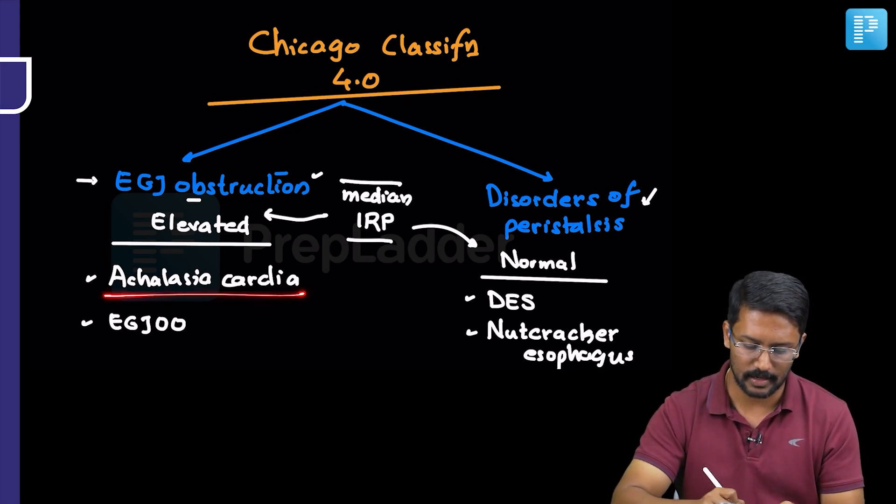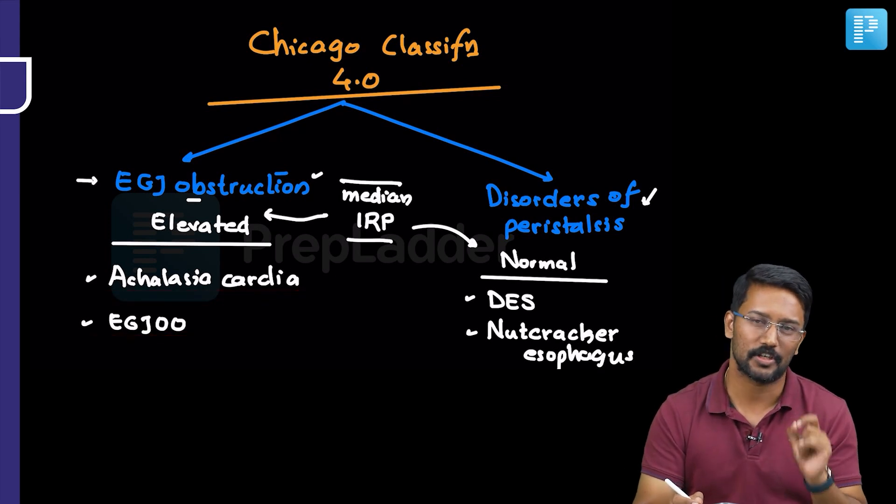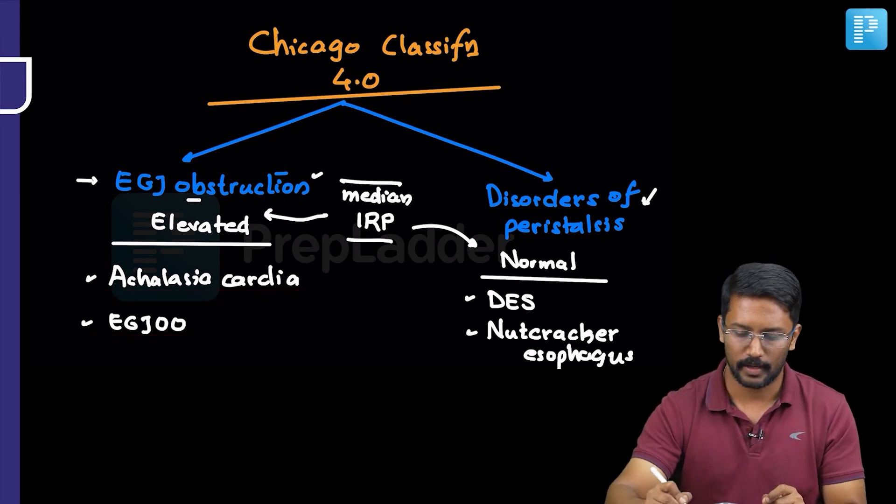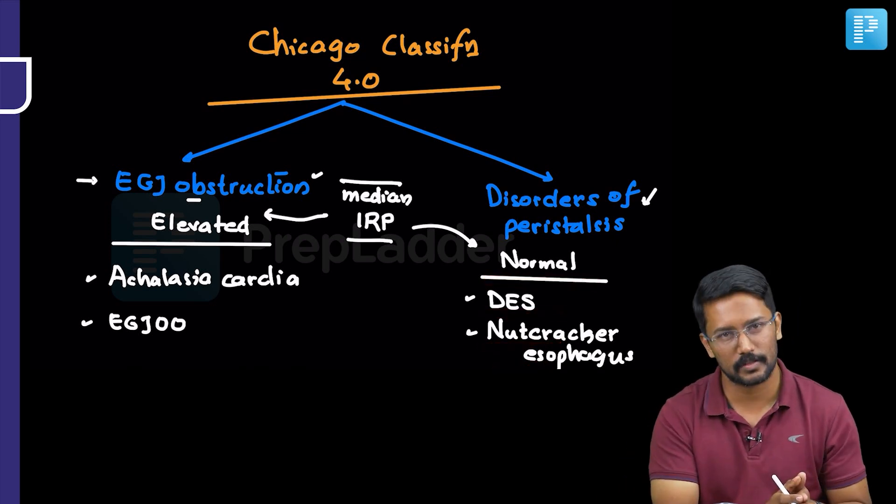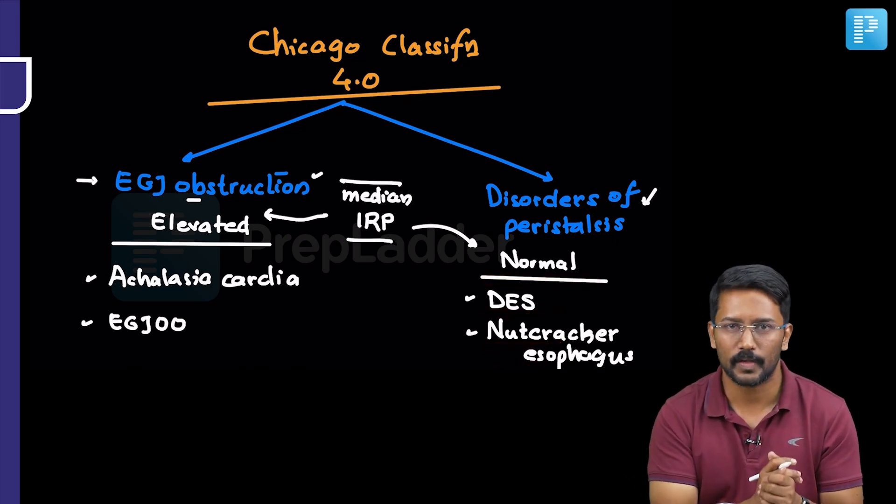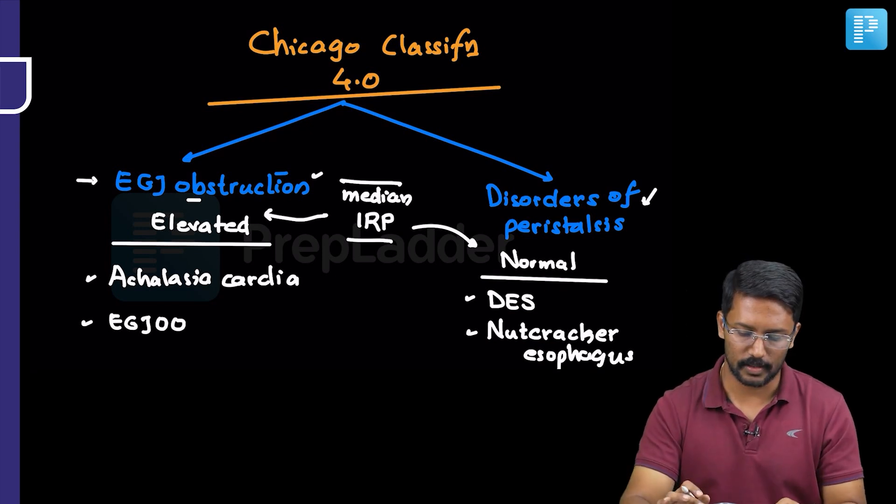So classical examples are achalasia cardia and the esophagogastric junction outlet obstruction. And for the peristalsis I have quoted two examples, diffuse esophageal spasm and nutcracker esophagus. This is the Chicago classification.